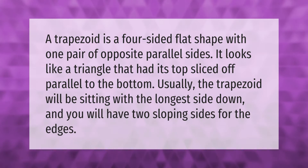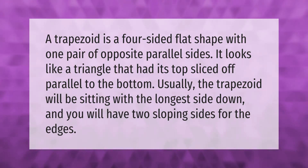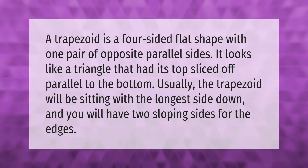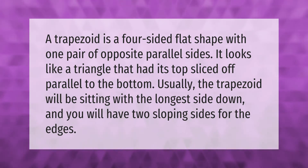A trapezoid is a four-sided flat shape with one pair of opposite parallel sides. It looks like a triangle that had its top sliced off parallel to the bottom. Usually the trapezoid will be sitting with the longest side down, and you will have two sloping sides for the edges.